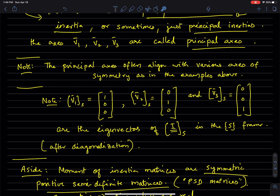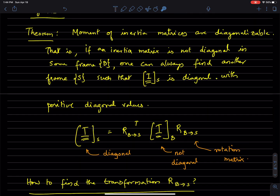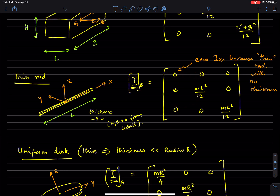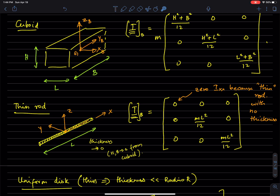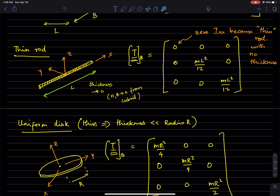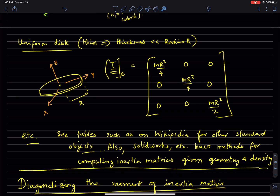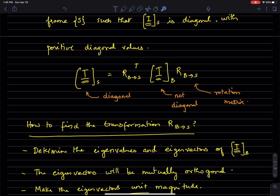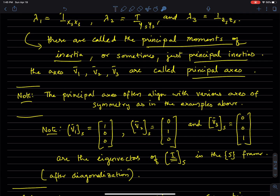Very often it turns out that the principal axes align with various symmetry axes. The reason why all these moment of inertia matrices are diagonal in the simple examples is because the axes used for representing these matrices are actually symmetry axes. If you choose your axes as symmetry axes, they will very often be the same as the principal axes — axes such that the moment of inertia tensor is represented by a diagonal matrix. So principal axes are often aligned with various axes of symmetry, and vice versa.